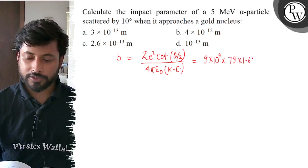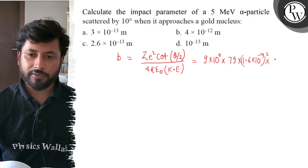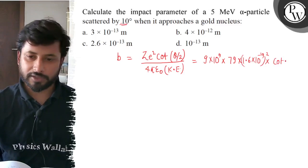E square, i.e. 1.6 into 10 to the power minus 19, electronic charge per square, into cot theta by 2. Theta is 10 degrees, theta by 2 is 5 degrees.